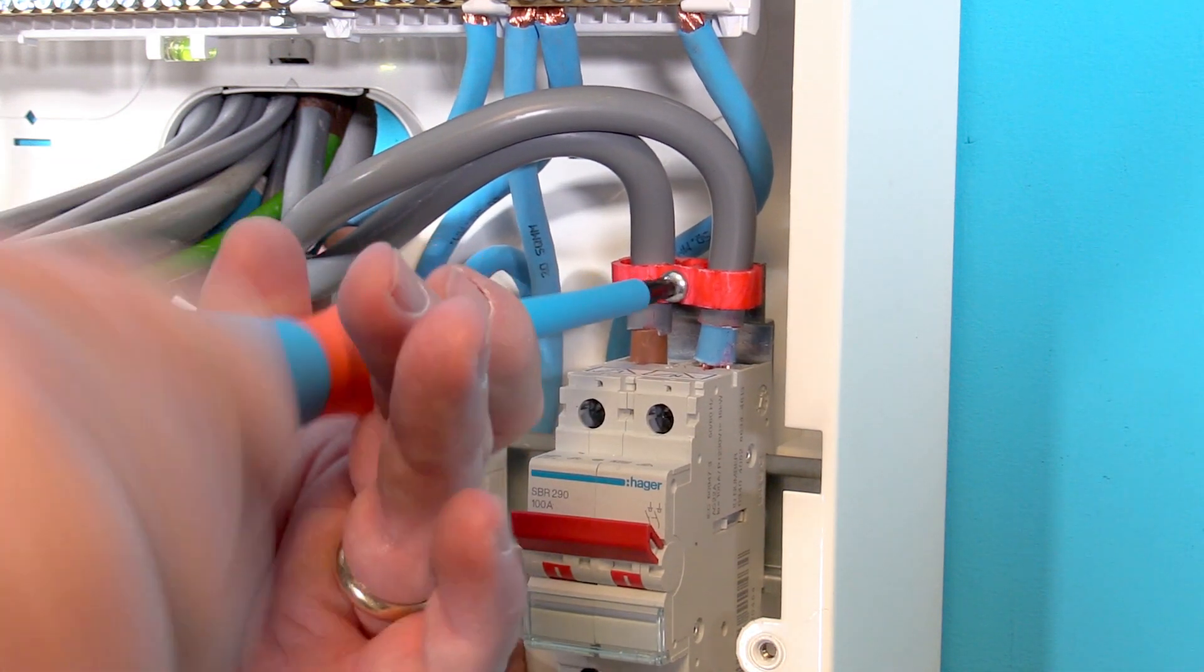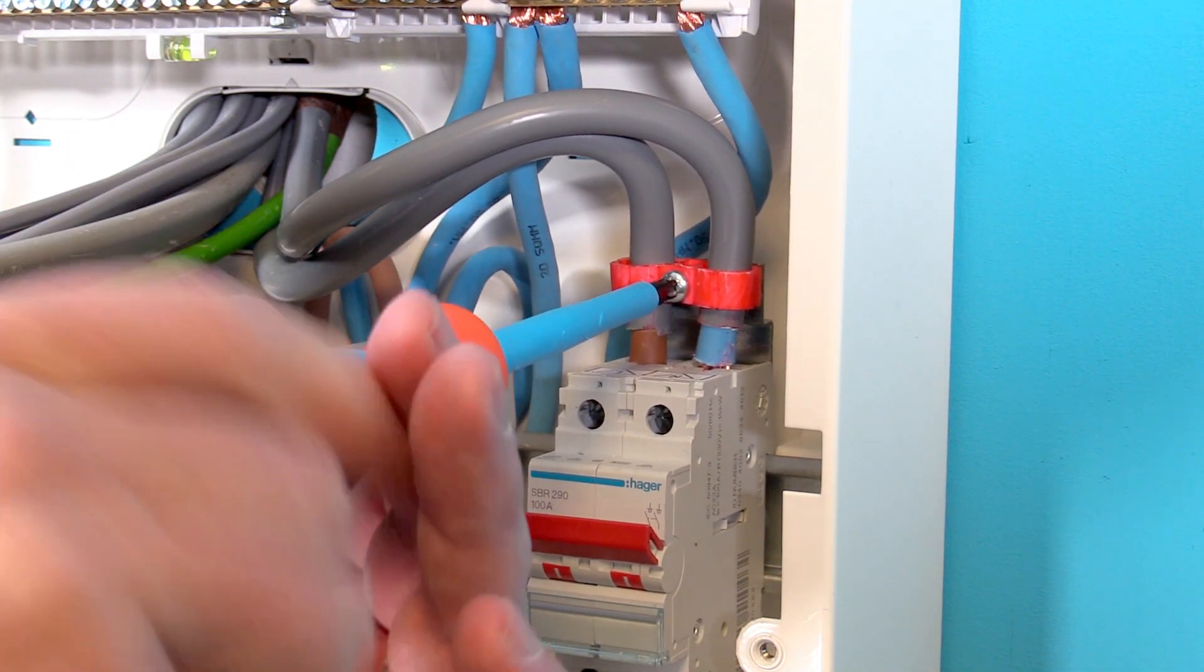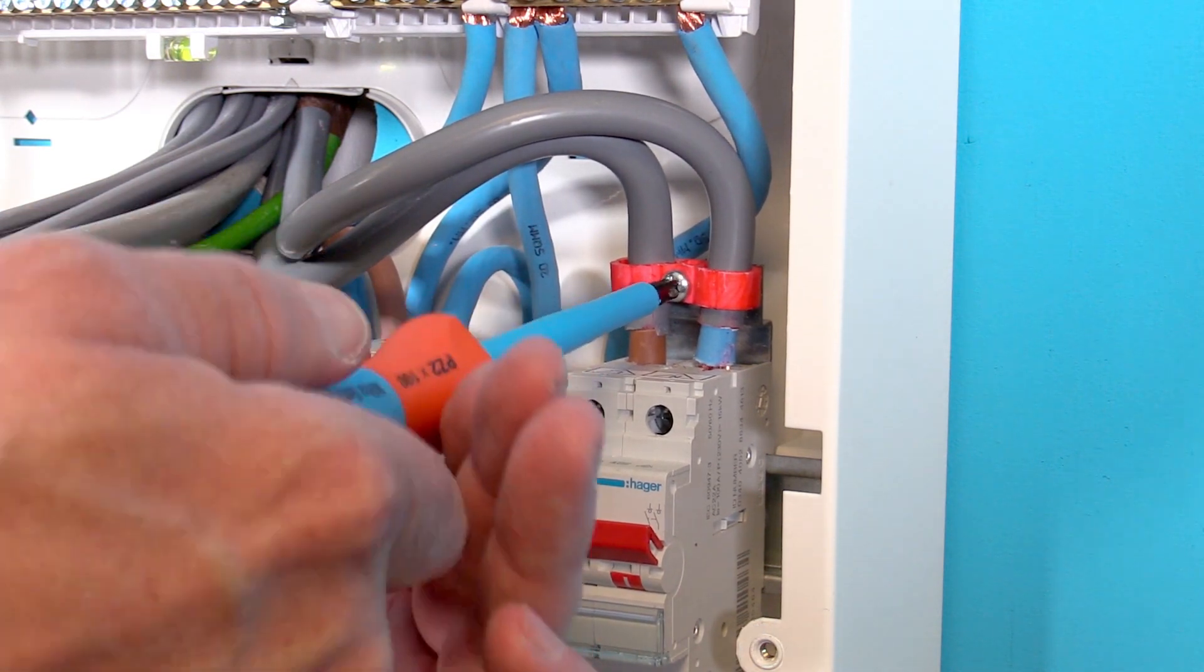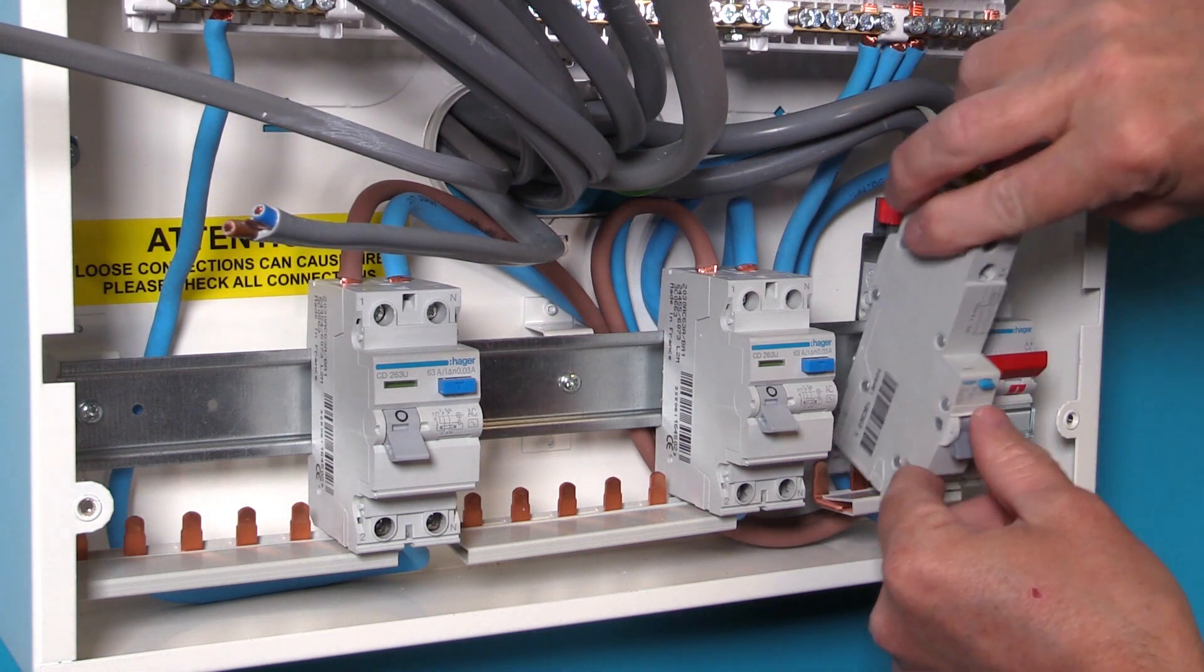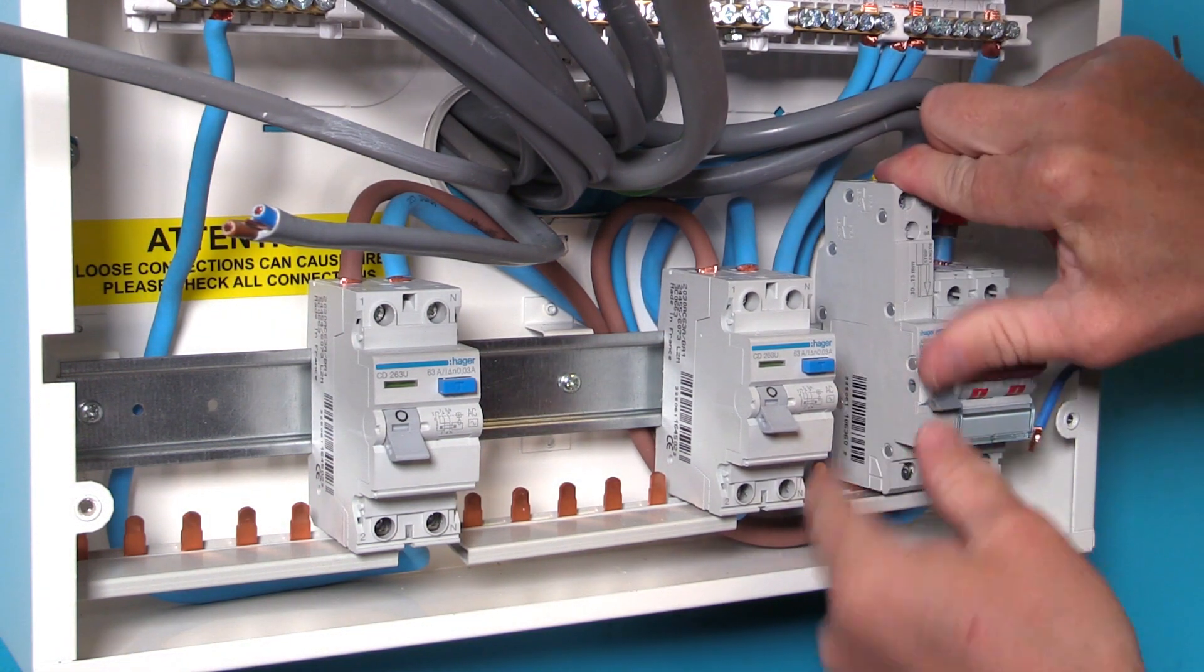We are always listening to customer feedback and as a result, we have changed the design of our cable clamp to make it thinner in width. This allows the installation of an RCBO next to the main switch while still maintaining the security of the clamp.